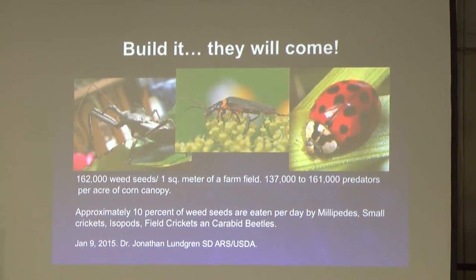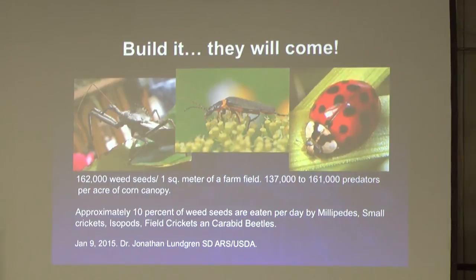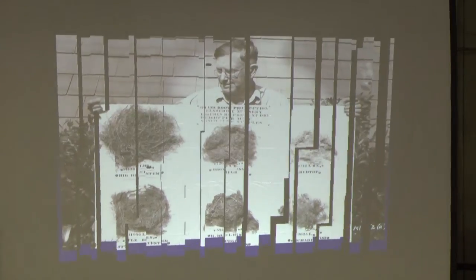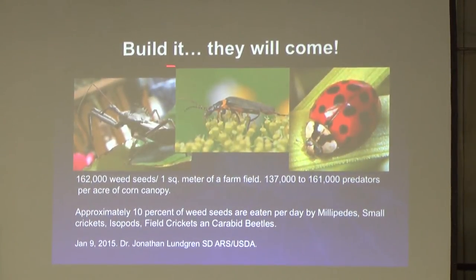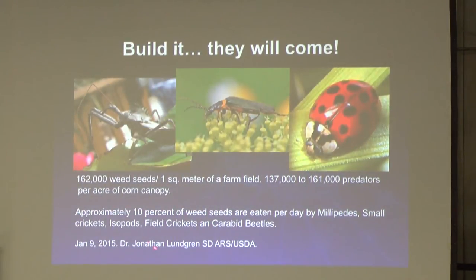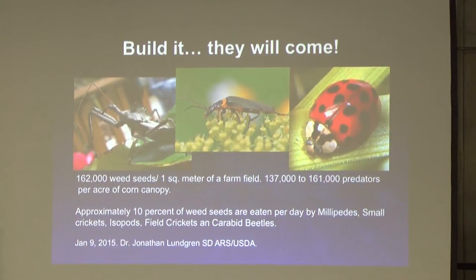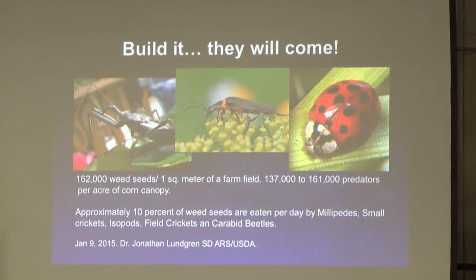When we bring diversity in, look what Jonathan's research shows: beneficial insects, predators, all the critters come back. He found 162,000 weed seeds per square foot, but organisms — millipedes, small crickets, isopods, field crickets, carabid beetles — can eat 10% of all those weed seeds per day. You don't have to pay anyone to go spray — they're eating those weed seeds for you.